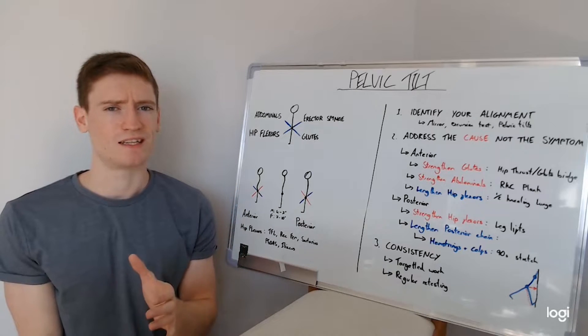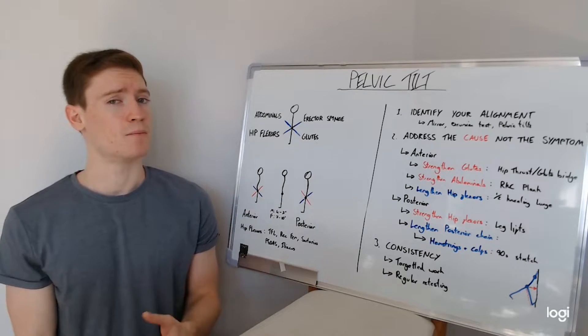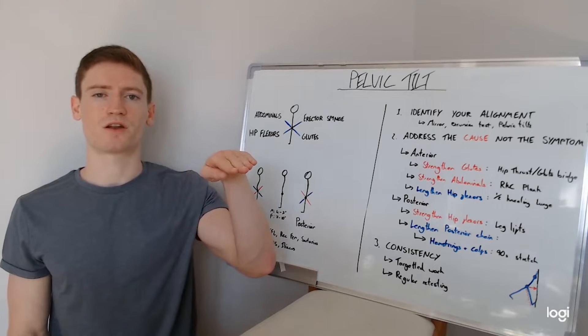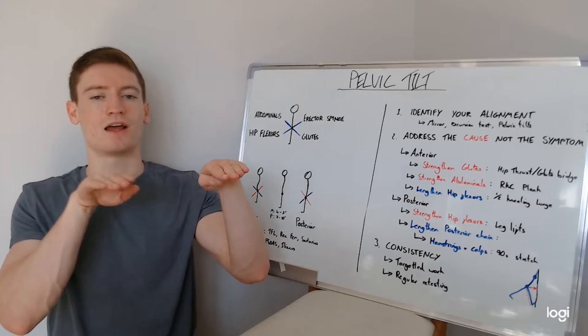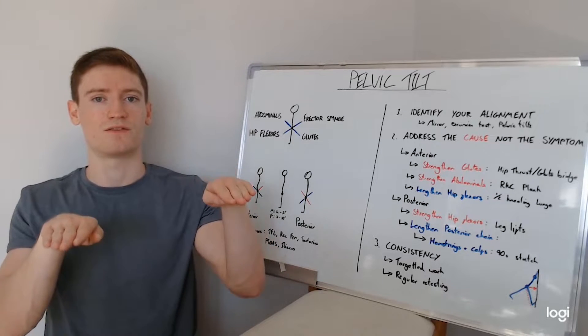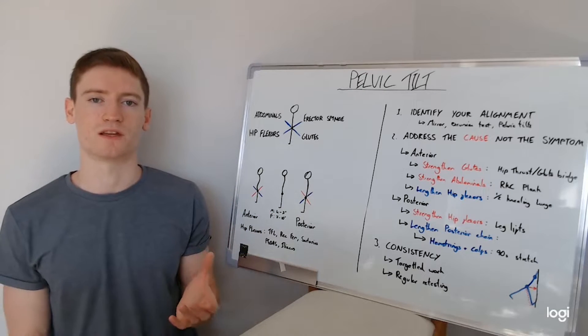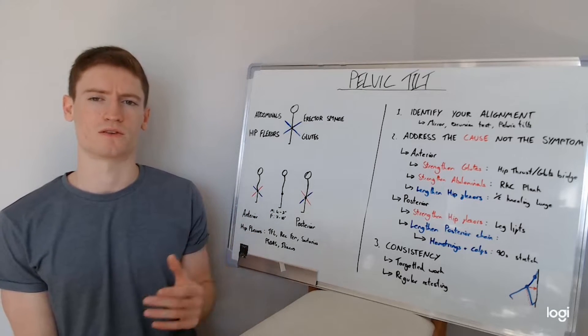If you're struggling to really tell, what you can do is get something like a belt, tie the belt round so that you've got the belt fastened at the front on that ASIS and then at the back it's on the PSIS. Just to give you that illustration, you've got then a physical line that you can see where that angle is in terms of the hips themselves, what degree of tilt you've got.